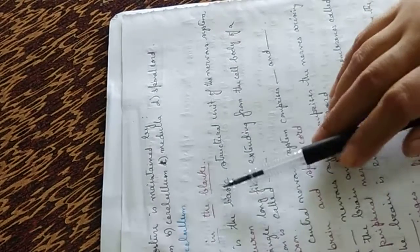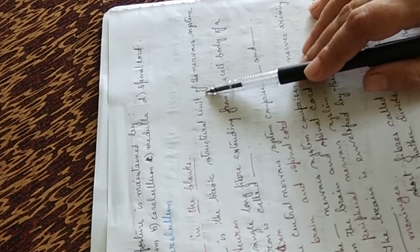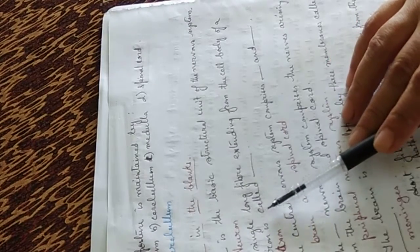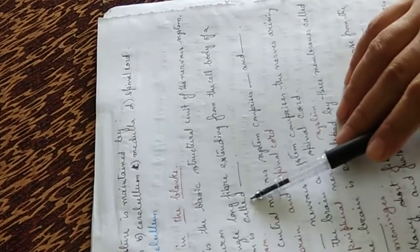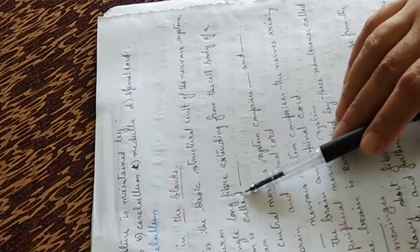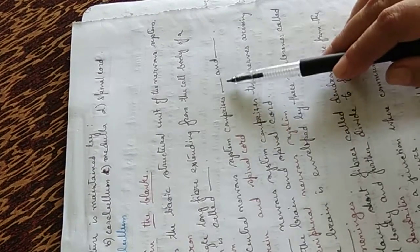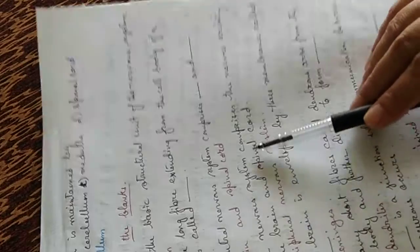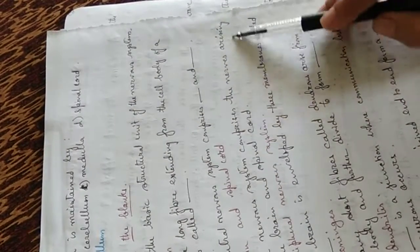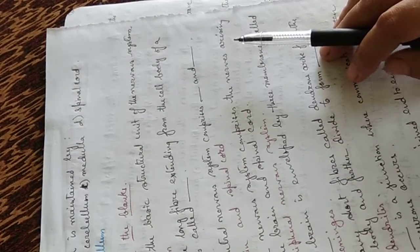Now the fill in the blanks section. The neuron is the basic structural unit of the nervous system. A single long fiber extending from the cell body of a neuron is called the axon. The central nervous system comprises of brain and spinal cord. The peripheral nervous system comprises the nerves arising from the brain and the spinal cord.